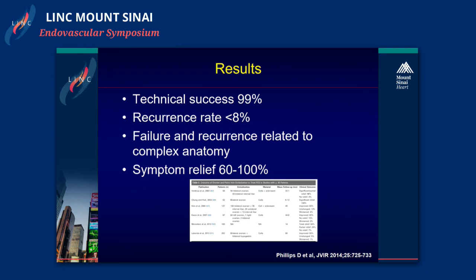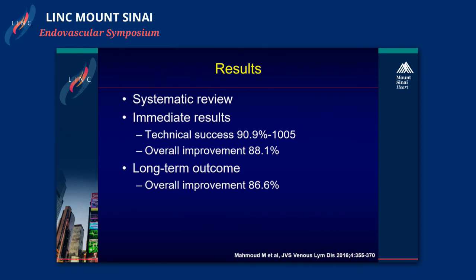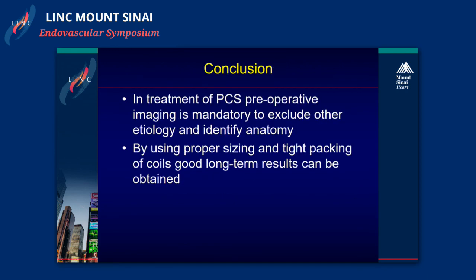Symptom relief is achieved in 60 to 100% of patients. A recent systematic review shows immediate technical success up to 100%, overall improvement almost 90%, and in the long term overall improvement is slightly over 85%. To conclude, in treatment of PCS, preoperative imaging is mandatory to exclude other etiology and identify the anatomy, thereby reducing radiation exposure to the patient. By using proper sizing and tight packing of coils, good long-term results can be obtained.